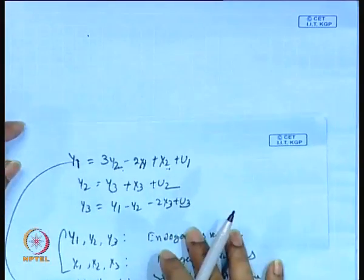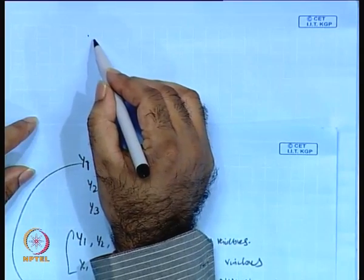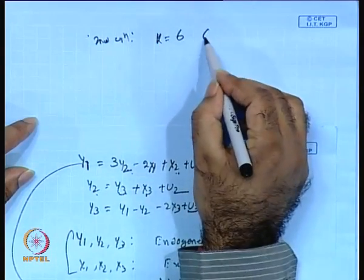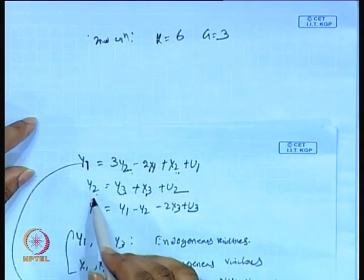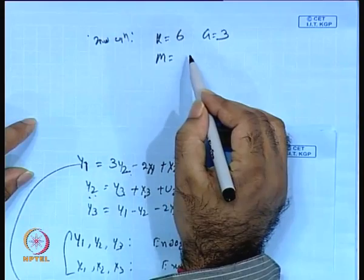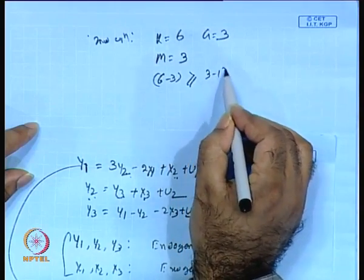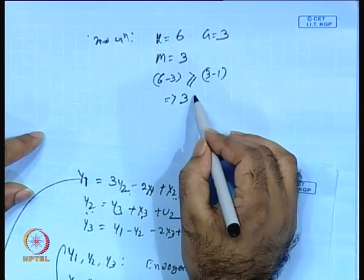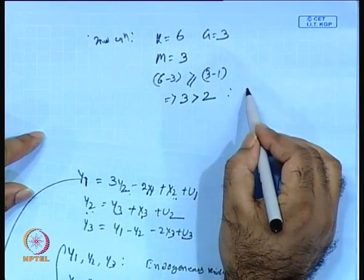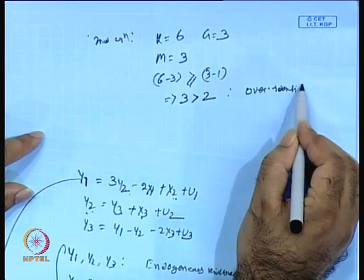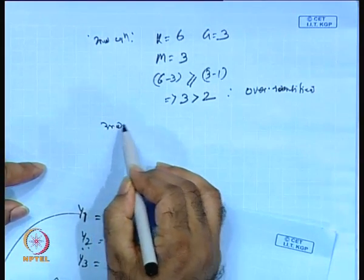For equation 2, variables are y₂, y₃, x₃ — so m = 3. Then 6 − 3 = 3 > 3 − 1 = 2, so the second equation is over-identified.